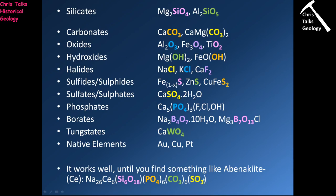There aren't many sulfite minerals, so we don't worry about them. When a mineral has multiple groups, the classification rule is: look at the order of the groups, and the first one on the left is the group used to classify the mineral. In this case we would classify it as a silicate. This works in the vast majority of cases — when you have a complex formula, the first group appearing is the one you use.